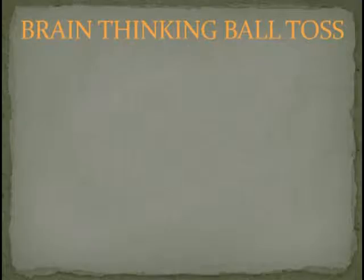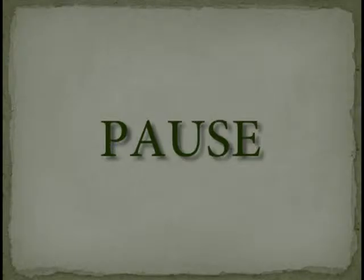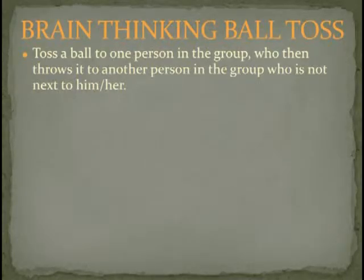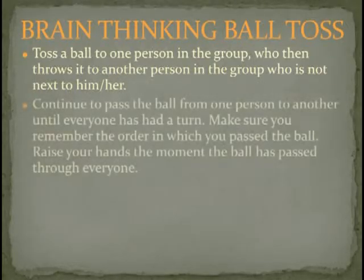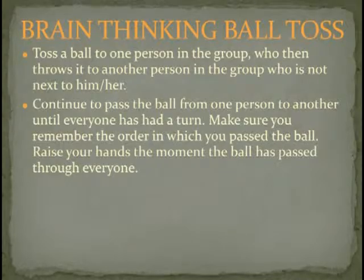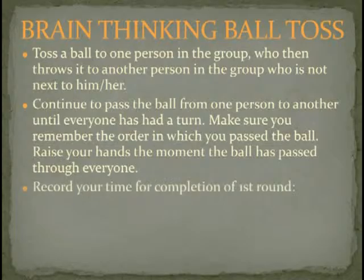Let's play a ball toss game to show how cells make connections with each other for thinking and learning. I want you to get up and form a circle. Now, someone will start and toss a ball to one person in the group. That person then throws it to another person in the group who is not next to the first person. Continue to pass the ball from one person to another until everyone has had a turn. Make sure you remember the order in which you passed the ball. Raise your hands the moment the ball has passed through everyone. Remember to record your time for the completion of the first round.